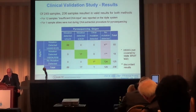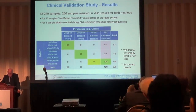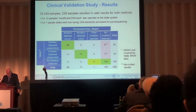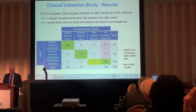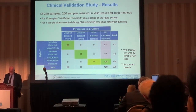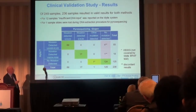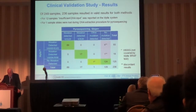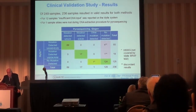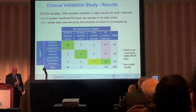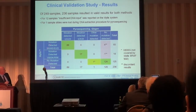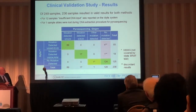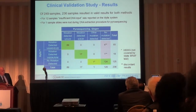Out of these 249 samples, 236 samples resulted in valid results for both methods. The discrepancy in some cases was due to insufficient DNA, reported by the IDYLLA system. One sample's slides were lost during the DNA extraction procedure for pyrosequencing. Regarding the results: the pyrosequencing results are shown alongside the IDYLLA results. For V600E — both 89 cases — were all in agreement, with no false negatives or false positives.